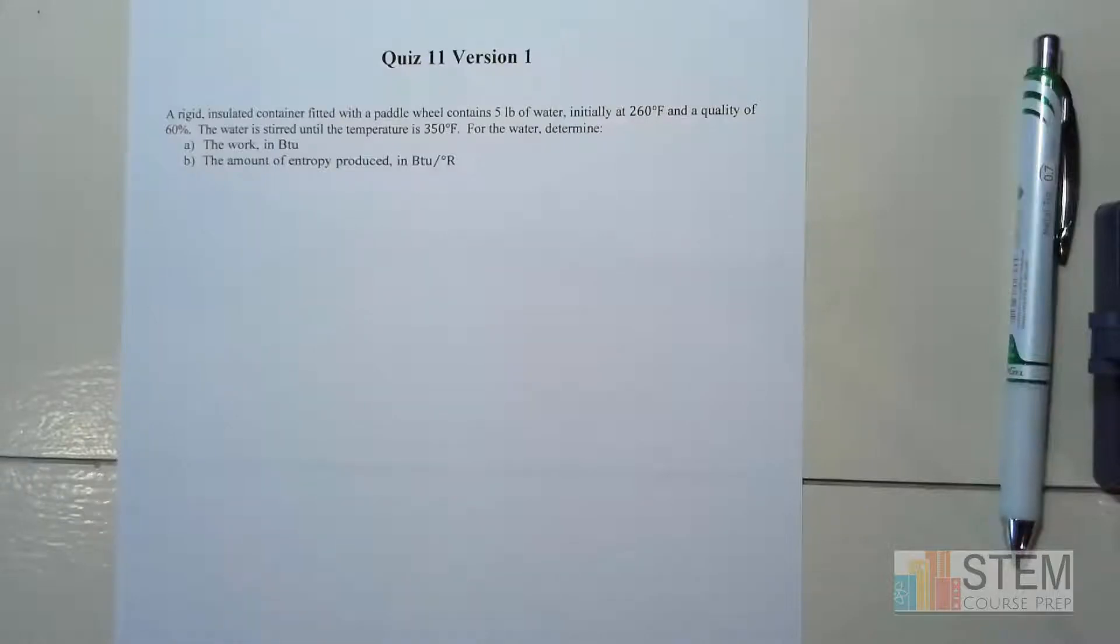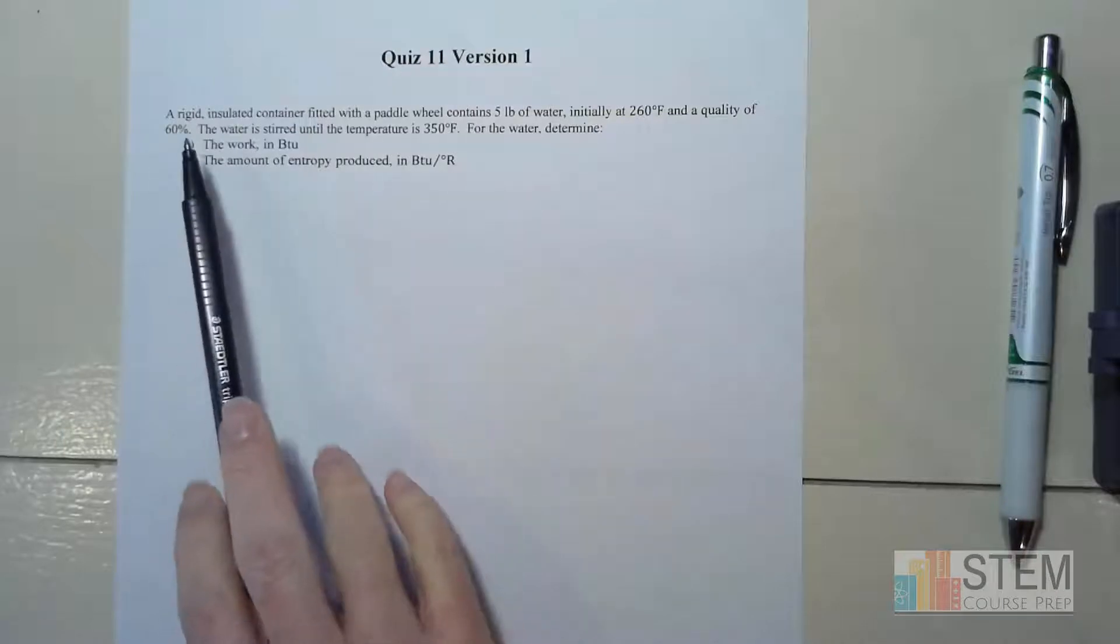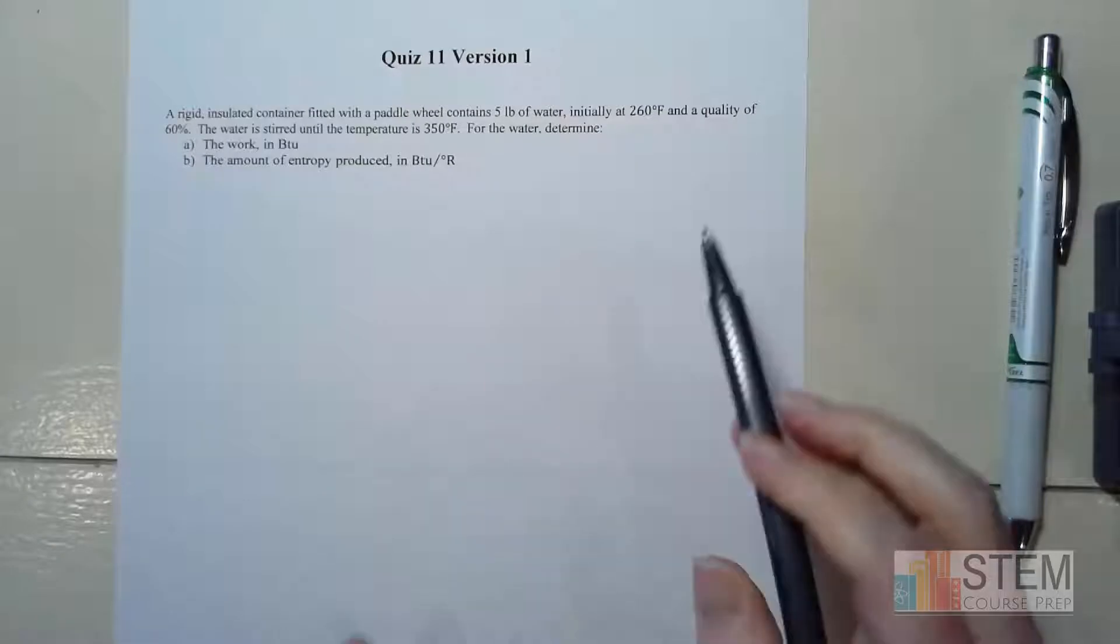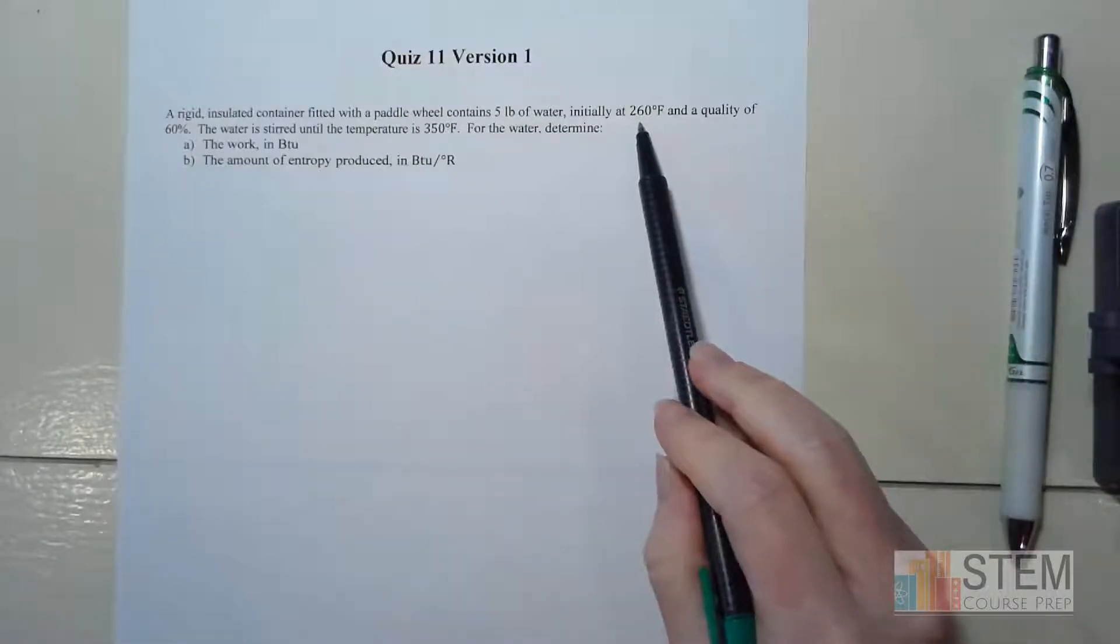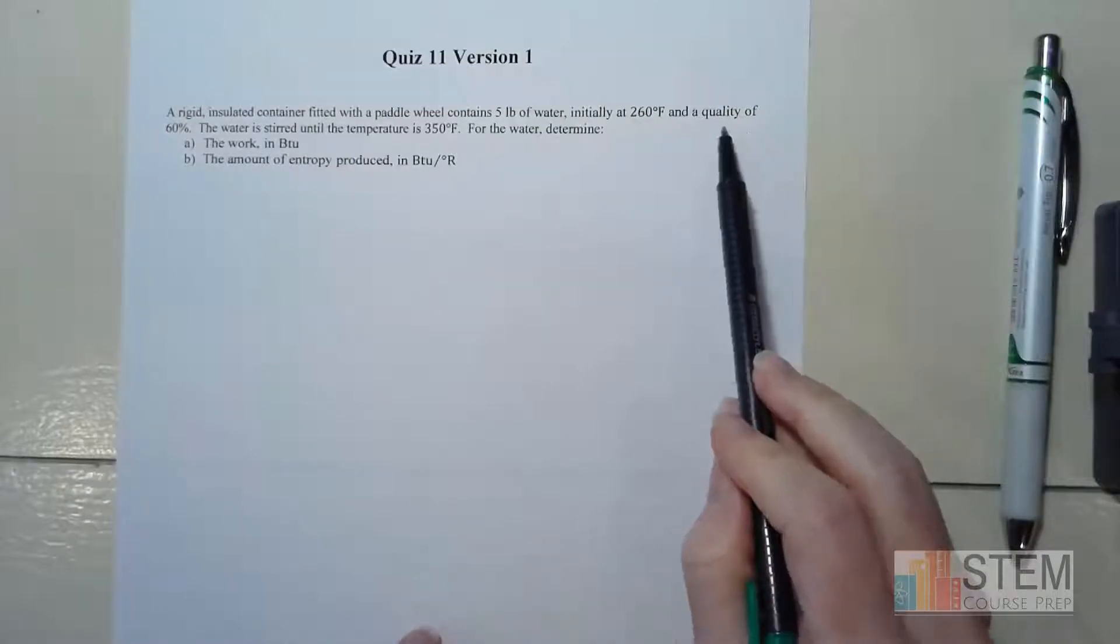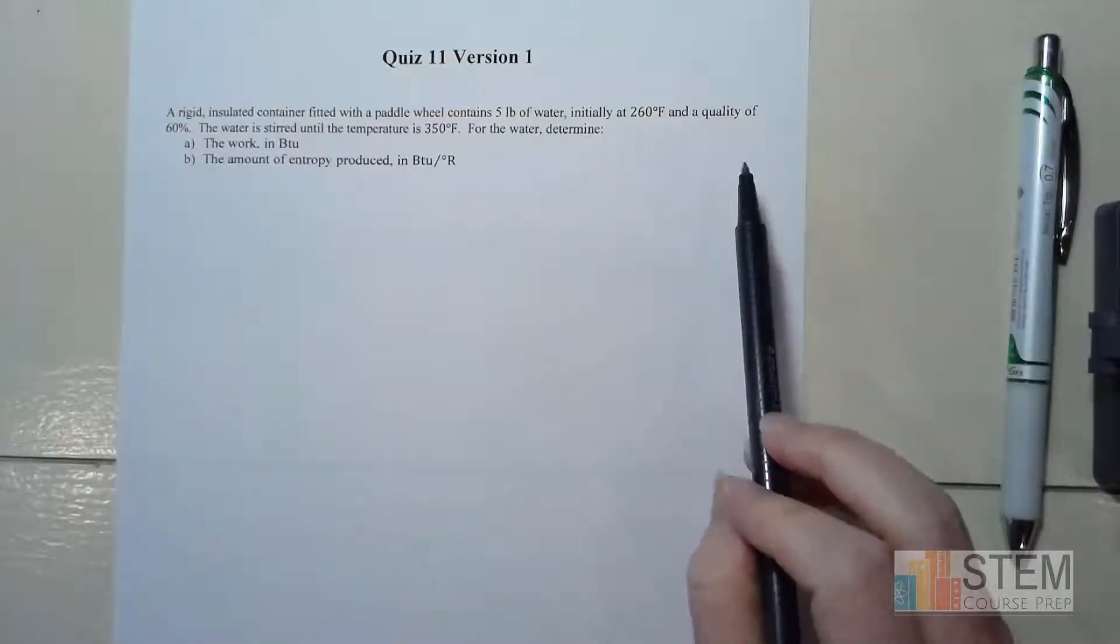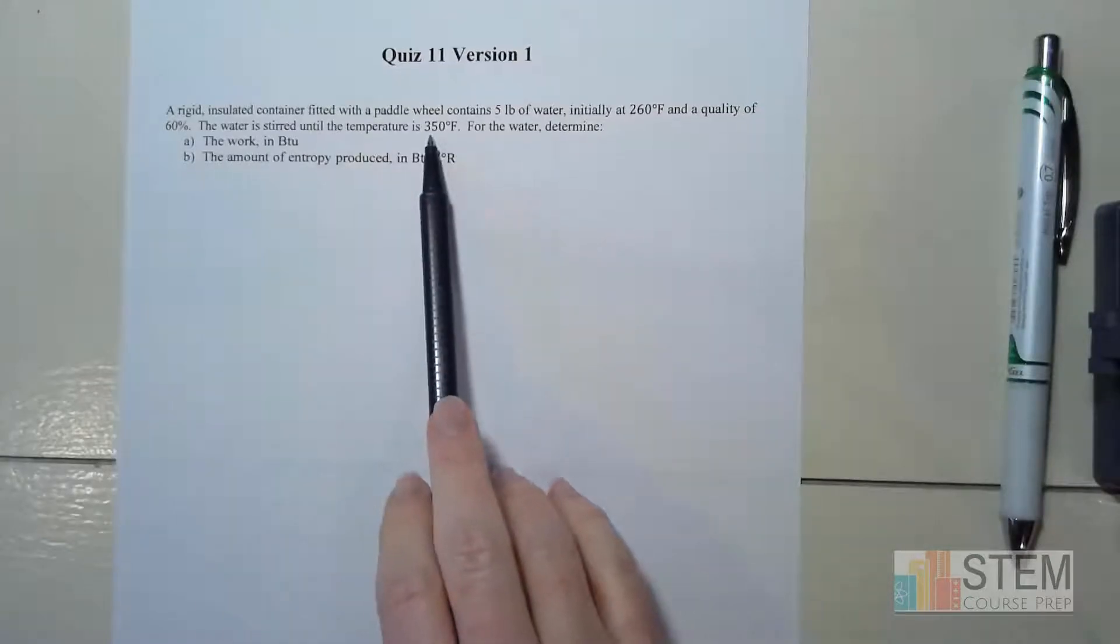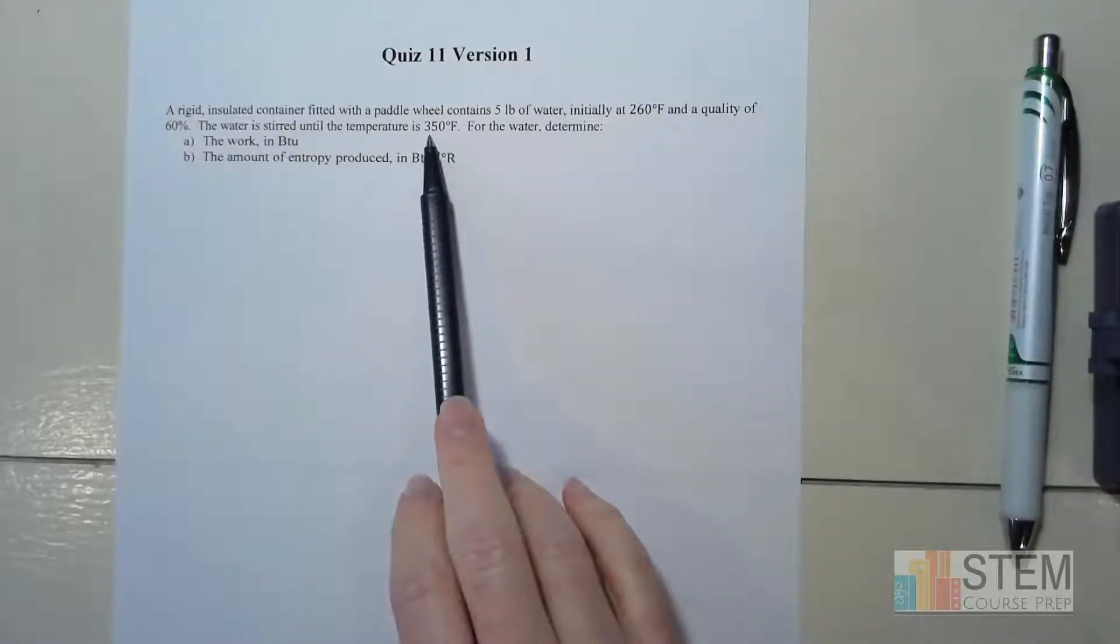Hey y'all, this is going to be Quiz 11 Version 1. What we've got in this one is a rigid insulated container fitted with a paddle wheel that contains 5 pounds of water. Initially we're at a temperature of 260 degrees Fahrenheit with a quality of 60%, and the water is stirred until the temperature goes up to 350 degrees Fahrenheit.